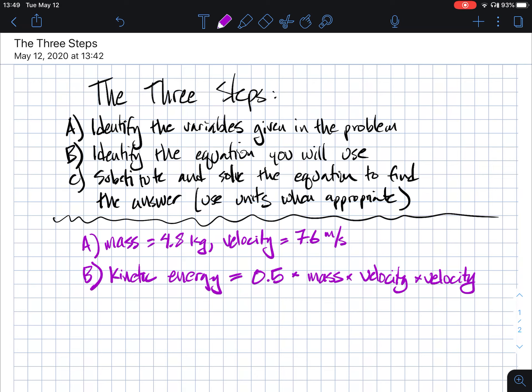So that's the equation we're going to use. And then the last step, you plug in the numbers and solve the equation to find your answer. So in this case, the kinetic energy is going to be equal to 0.5 times the mass of the bowling ball, which was 4.8, times the velocity of the bowling ball, which was 7.6, times the velocity again, which is still 7.6.